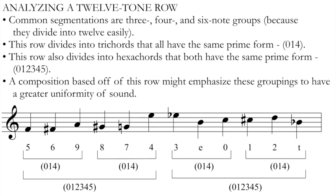They're all (0, 1, 4) trichords with a half step, a minor third, and a major third in them. We can see that the first 3 notes fit that category, then the next 3, the next 3, and the next 3. If we look a little bit deeper, we can also see that the row divides into hexachords that have the same prime form: (0, 1, 2, 3, 5, 4). If I was going to compose a piece of music based off this row, I might emphasize these particular groupings — the trichords and the hexachords — if I wanted to have a greater uniformity of sound.